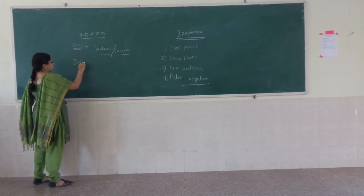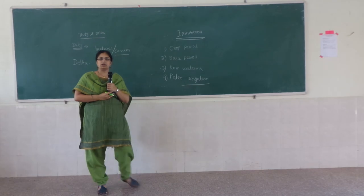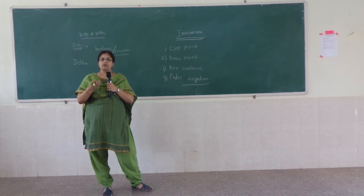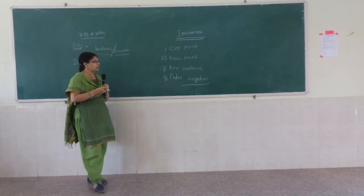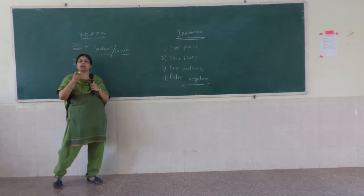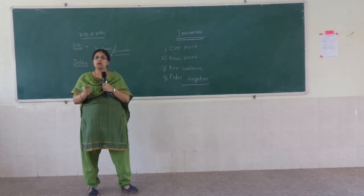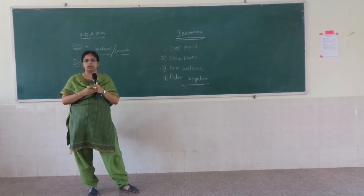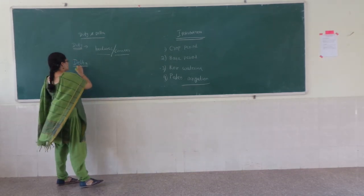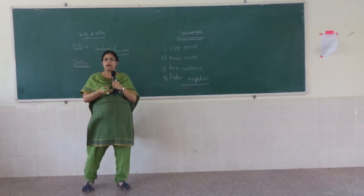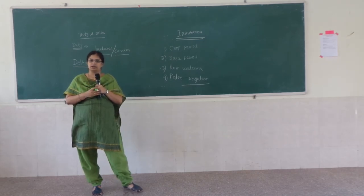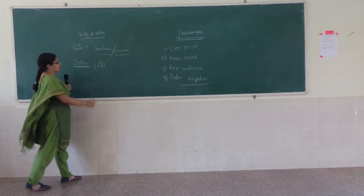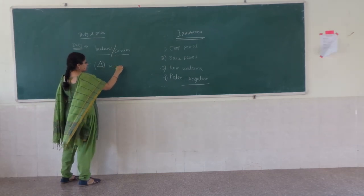The next topic is delta. Delta is the total depth of water required for a crop to grow throughout the base period. The base period is the time period between the first watering and the last watering. Throughout that base period, the total amount of water to be applied to the field, in terms of depth, is nothing but the delta. Delta is expressed in meters.